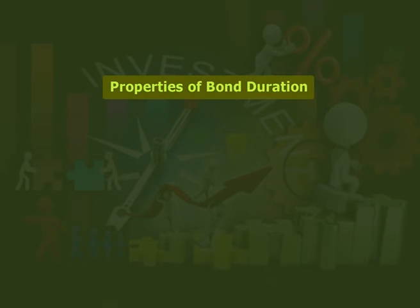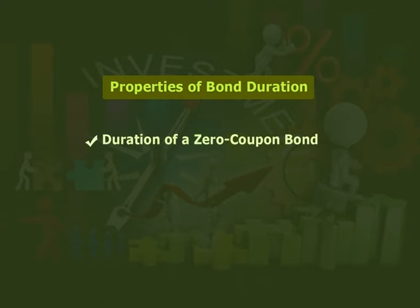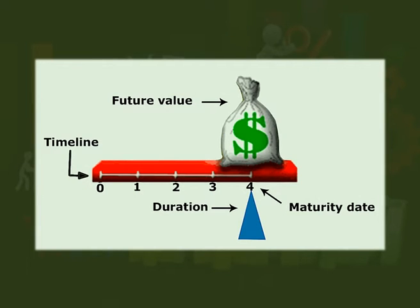Starting with the duration of a zero coupon bond: as we can see in the figure, a four-year time period is taken by a zero coupon bond to mature. The money back balancing on the far right represents the future value of the bond — the amount paid to the bondholder at maturity. The fulcrum holding the lever represents duration; in this case it is at four years, and the red lever is balanced here. The fulcrum balances the lever at the point on the timeline at which the amount paid for the bond and the cash flow received are equal. The entire cash flow of a zero coupon bond occurs at maturity, so the fulcrum is located directly below this one payment.